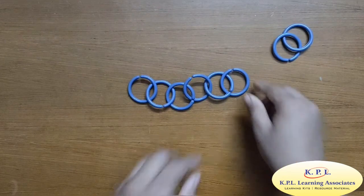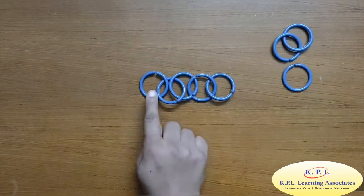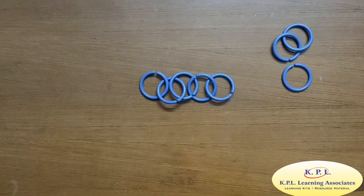Take away another one. We are left with 1, 2, 3, 4, 5. 5 circles.